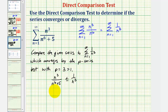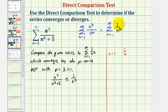To determine whether this is true, we'll compare several of the first terms of the two series. When n equals one, for the given series we'd have one cubed divided by the quantity one to the sixth plus five, which is one sixth. And for our comparison series we have one divided by one cubed, which is one. Notice how one sixth is less than or equal to positive one, so that's good, but we do want to show several terms, not just the first one or two.